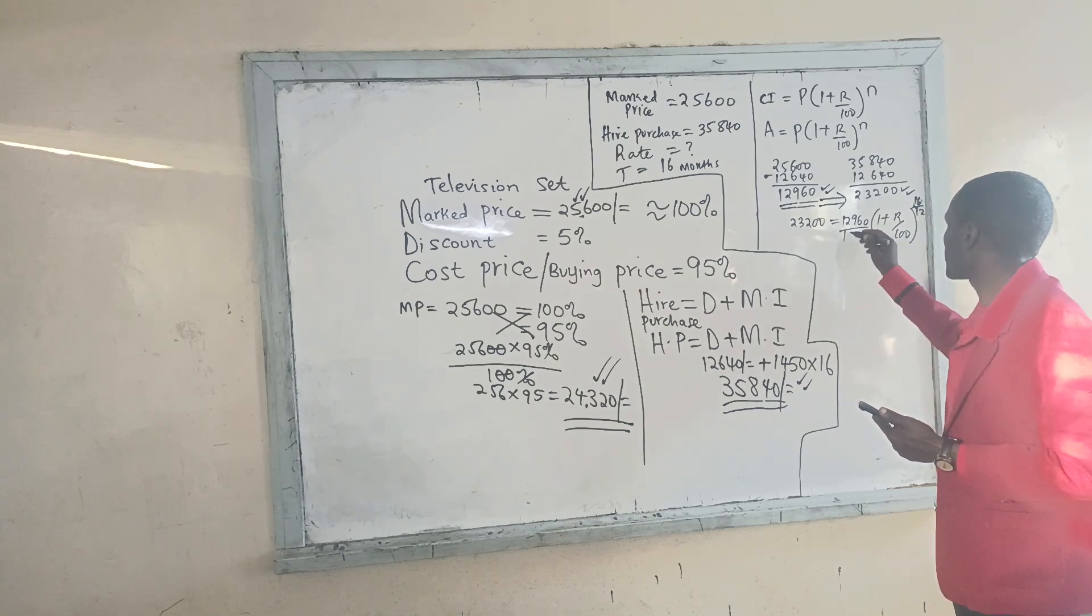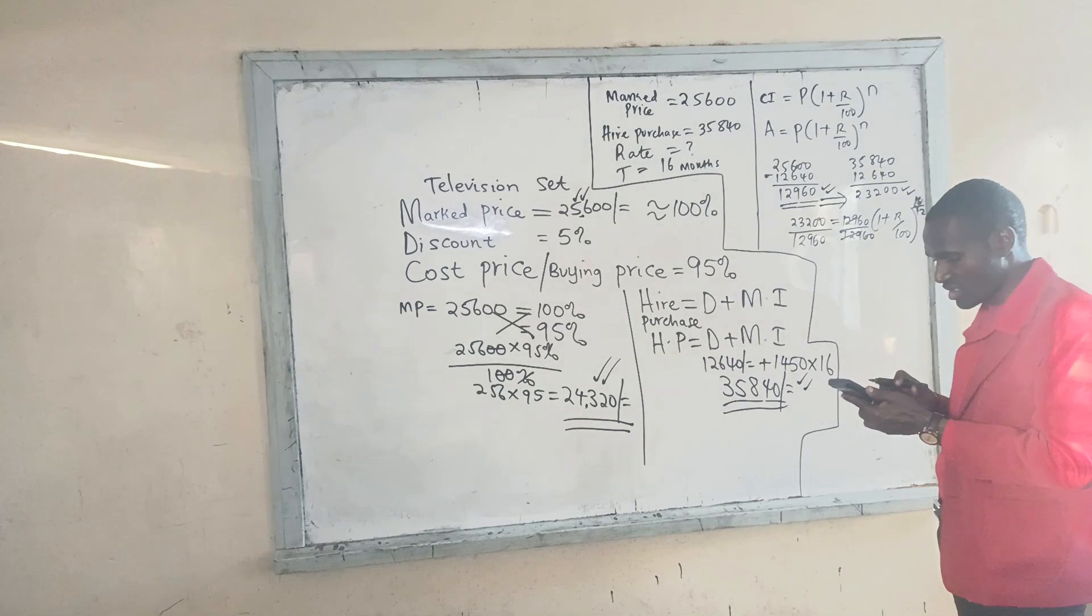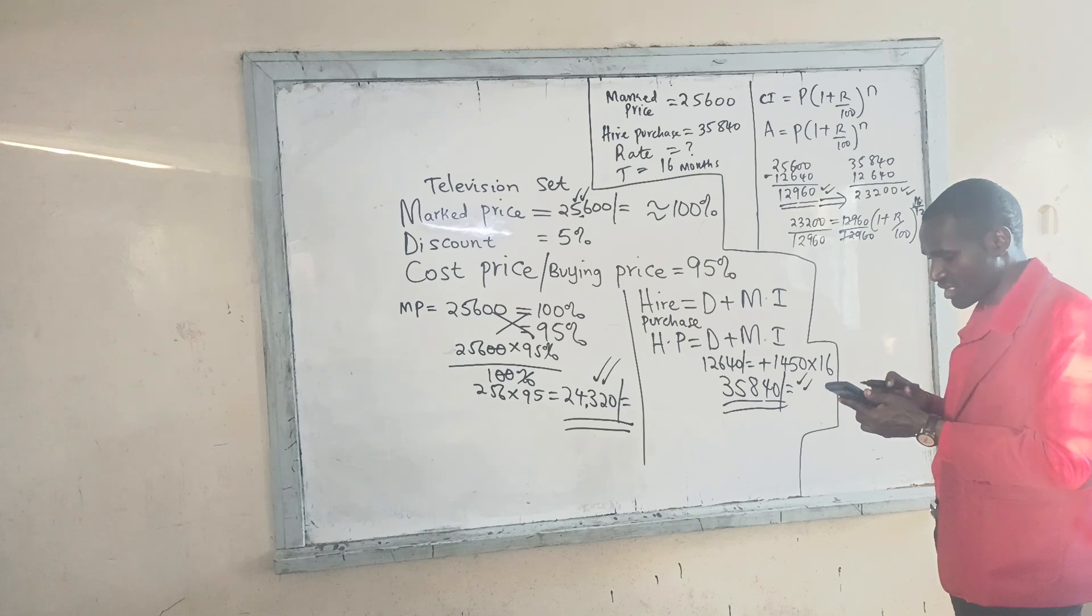So we shall divide by 12,960. We have 23,200 divide by 12,960. So we have 1.790 is equal to 1 plus R over 100.